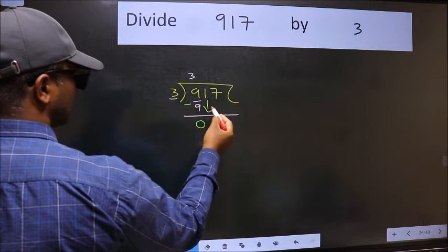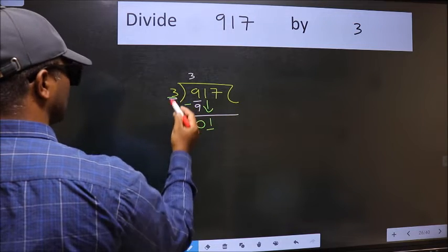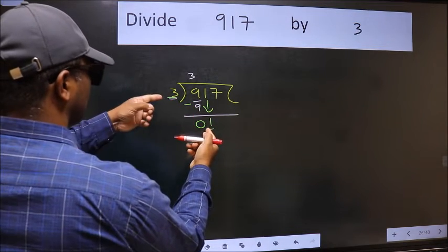After this, bring down the beside number. So 1 down. Now here we have 1 and here 3. 1 is smaller than 3.